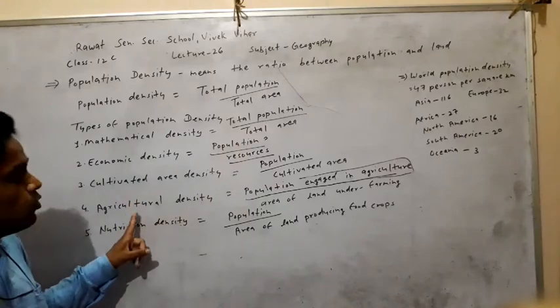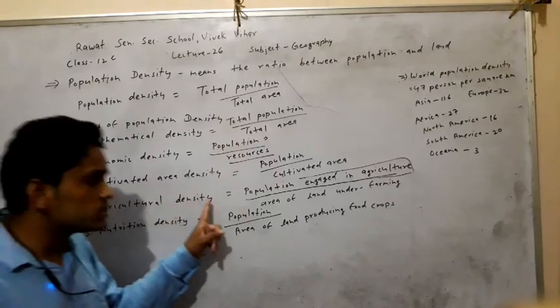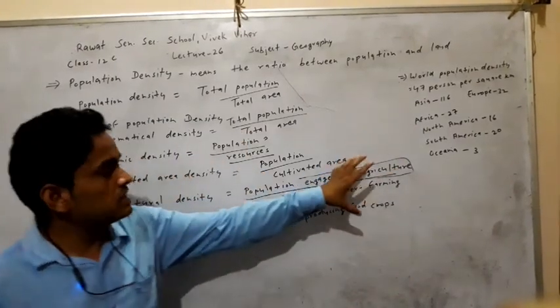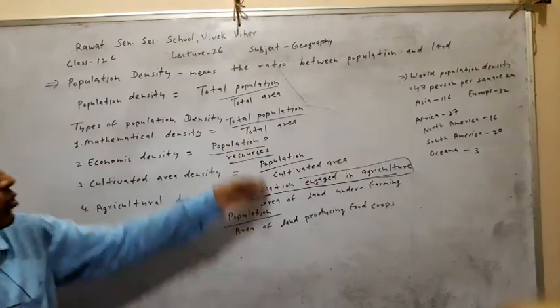But in agricultural density, the population counted is only the population engaged in agriculture — here only the farmers are counted, not the total population.